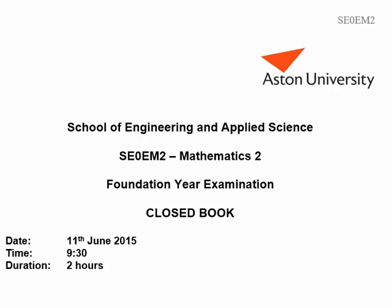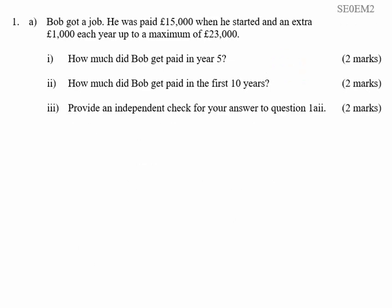Mathematics 2 Exam 2015, Question 1. Bob got a job. He was paid £15,000 in his first year and then got £1,000 a year for each year up to a maximum of £23,000.